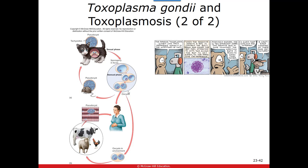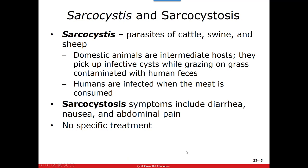Another apicomplexan found in farm animals is Sarcocystis, which causes sarcocystosis. It's a parasite found in cattle, pigs, and sheep — these animals are intermediate hosts. They pick it up while grazing on grass containing human feces, since many people still use human feces as fertilizer. We pick it up when meat from these animals is consumed undercooked. It causes basic food poisoning symptoms — diarrhea, nausea, abdominal pain — but it will go away on its own as the organism leaves with the diarrhea and vomiting. No specific treatment is needed.